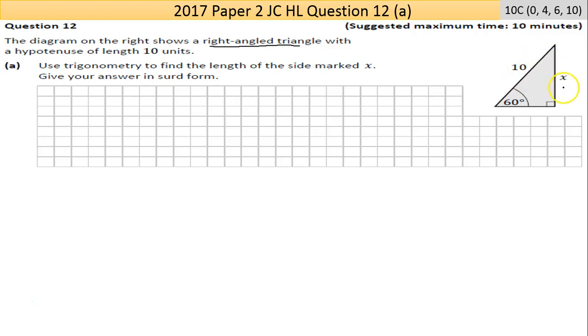You have an angle of 60, the hypotenuse is 10, the side marked X, and the right angle. We could work out this far side: 90 and 60 would be 150, so that would be 30. It's the standard 60-30 triangle. Use trigonometry to find the length of the side marked X. Give your answer in surd form, which means in square root form.